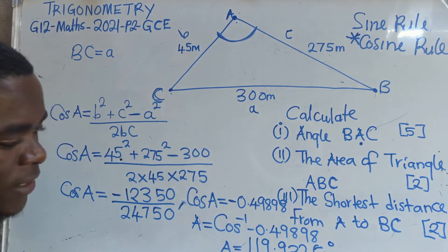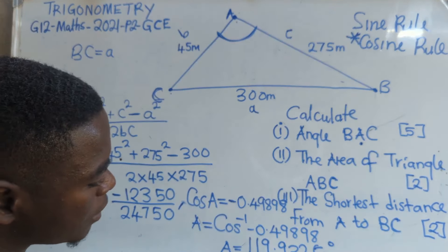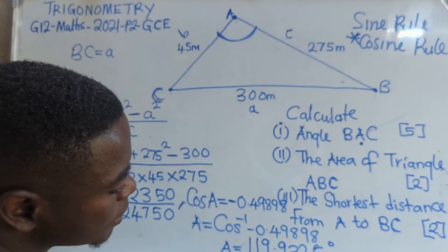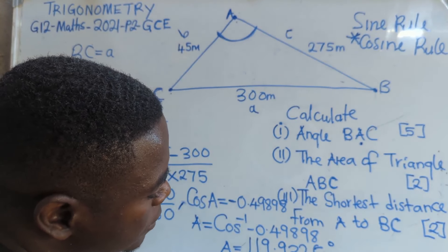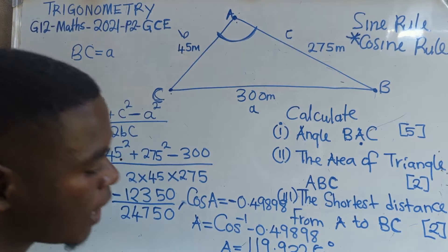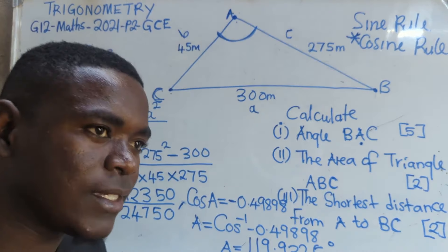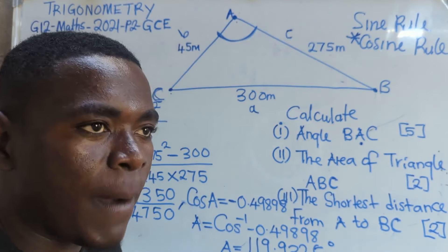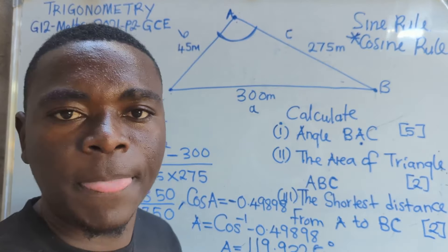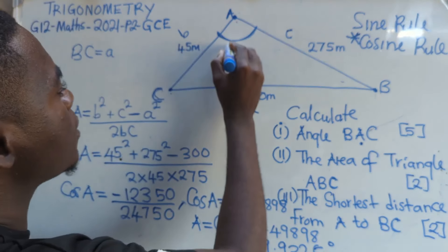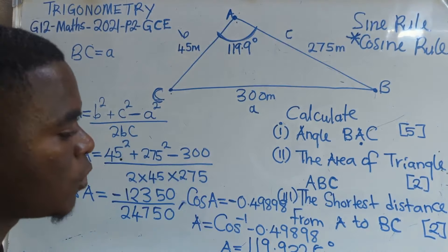We can end here. We say degrees. Therefore, angle BAC is equal to 119.9 degrees as your answer. Those of you that are rounding off to the nearest whole number, you are saying 120 degrees — it is just one and the same thing. So the angle that is there is 119.9 degrees.